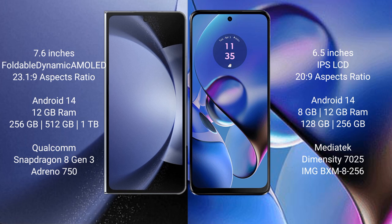The Samsung Galaxy Z Fold 6 comes with 12GB RAM and 256GB, 512GB, or 1TB internal storage, powered by the Qualcomm Snapdragon 8 Gen 3 processor with an Adreno 750 GPU. The Motorola Moto G64 comes with 8GB or 12GB RAM and 128GB or 256GB internal storage, powered by the MediaTek Dimensity 7025 processor with an IMG BXM-A GPU.